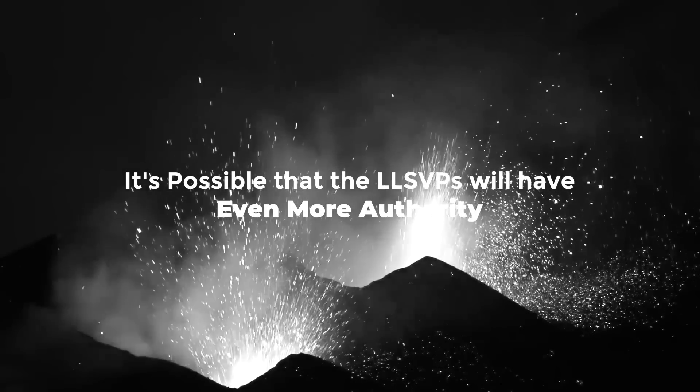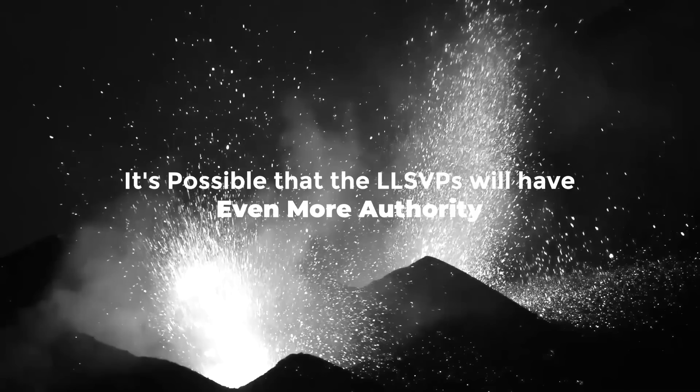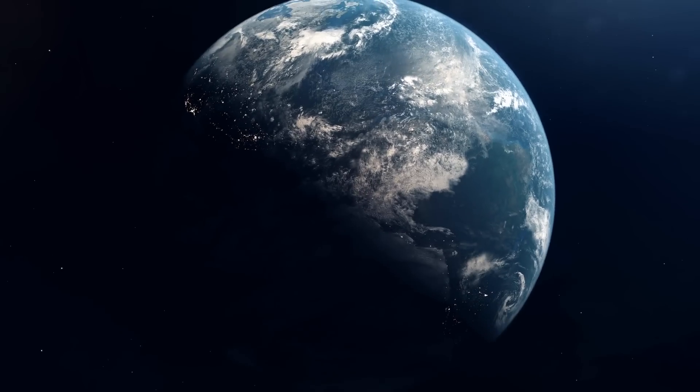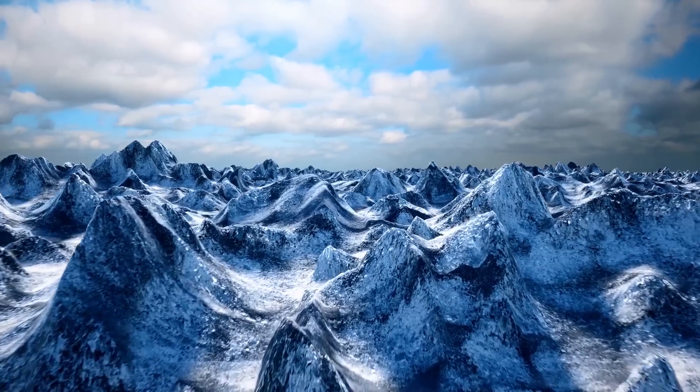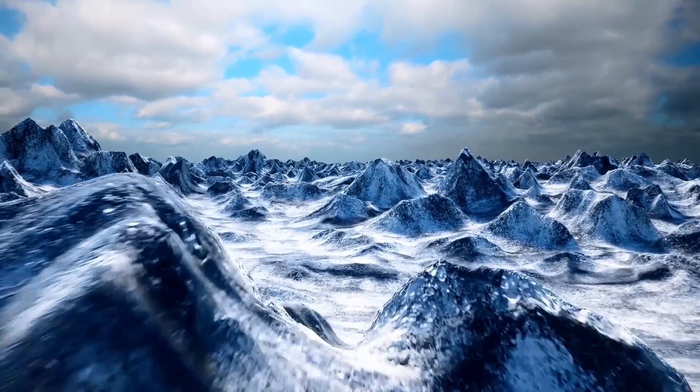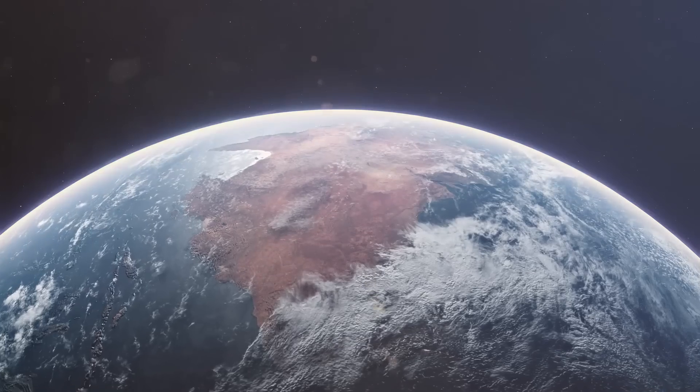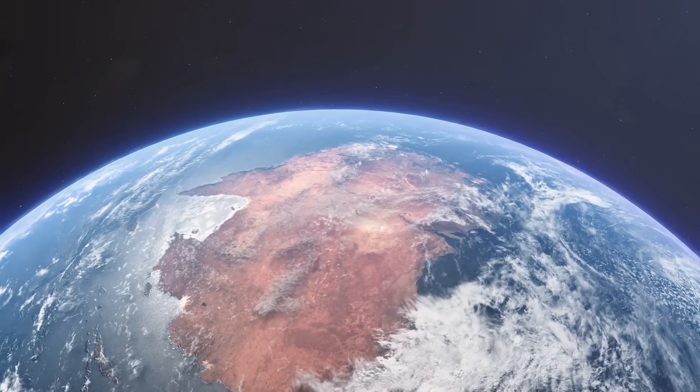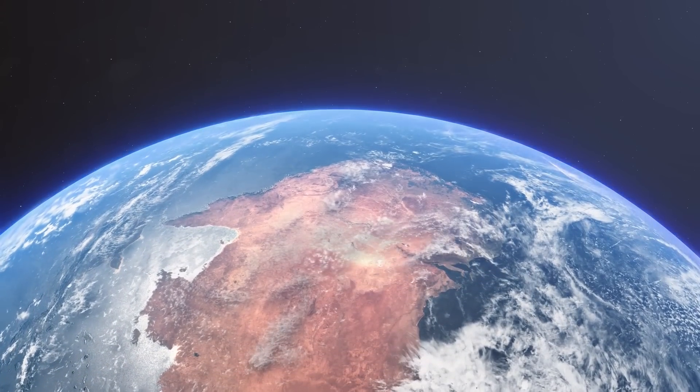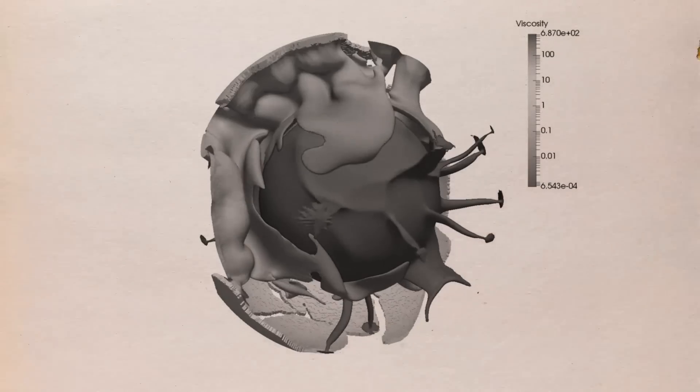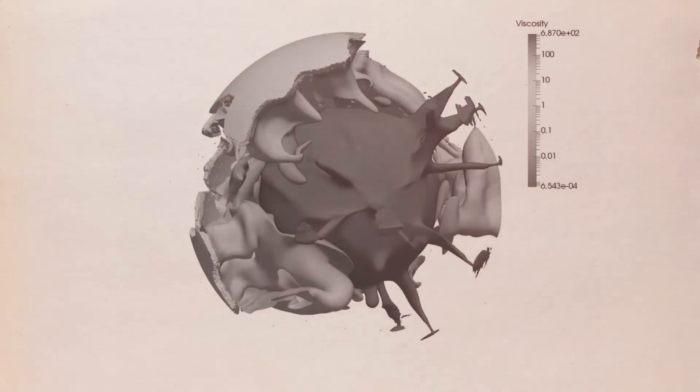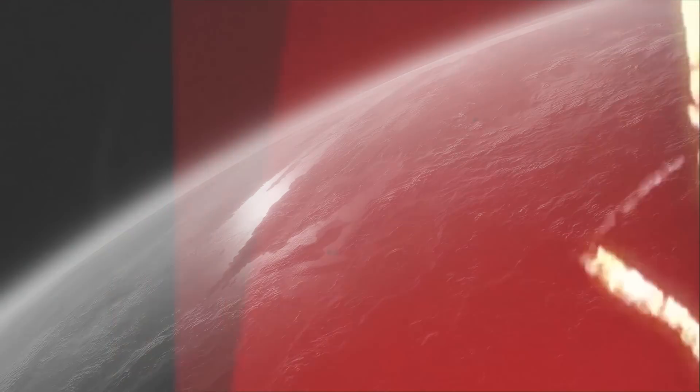It's possible that the LLSVPs will have even more authority. For a long time, scientists have pondered the mystery of why Earth rotates on its axis at the particular tilt it does, or why the North Pole is located in the Arctic and not someplace else. The Earth's axis has remained largely steady for billions of years, although various causes, including climate change, are thought to contribute to slight wobbles in either direction. The Earth's blobs are positioned precisely on either side of the axis, which raises the intriguing possibility that they either move there due to Earth's rotation, or are influencing how it spins.